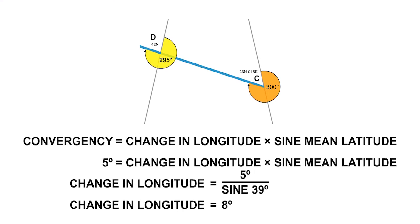The question has told us that the longitude of C is 15 east and D is 8 degrees further west. So the longitude of D is 7 east.